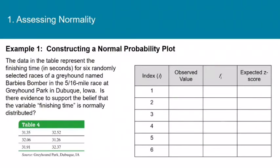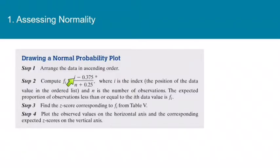What we would do is take these six values and sort them from smallest to largest. For the smallest data value the index is 1, and for the next smallest the index is 2, and so on. Now it's time to calculate f sub i. To do that we need that formula from the last slide: f sub i equals i minus 0.375 over n plus 0.25. i is the index and n is the sample size. For our problem n equals 6.